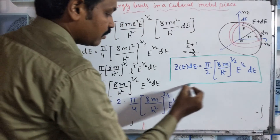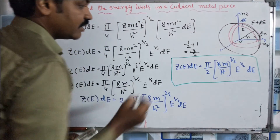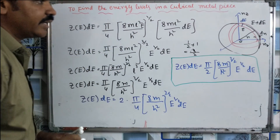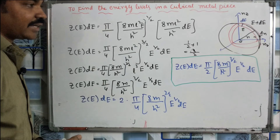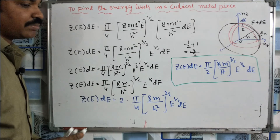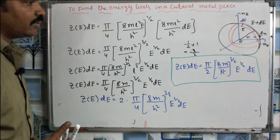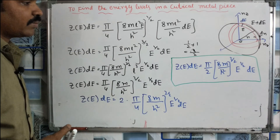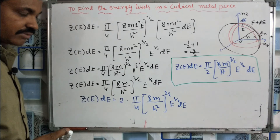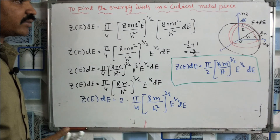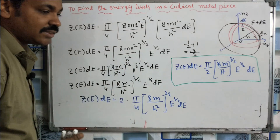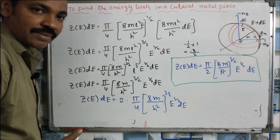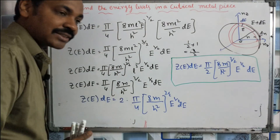The number of available energy states is given by this equation. We will calculate it easily. In this video, we discussed the quantity and derivation of the density of states. Thank you. Next class.